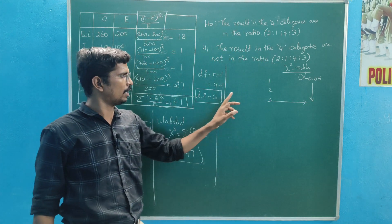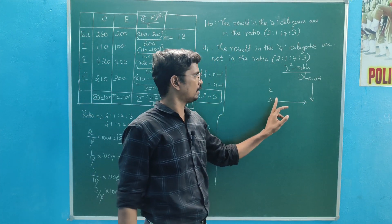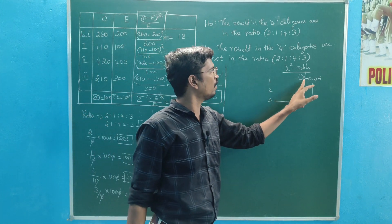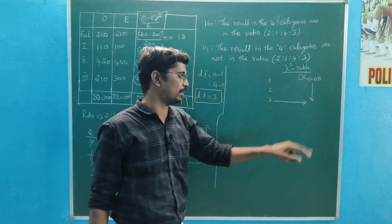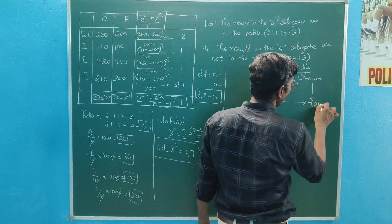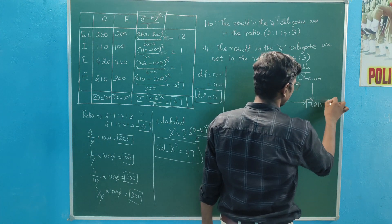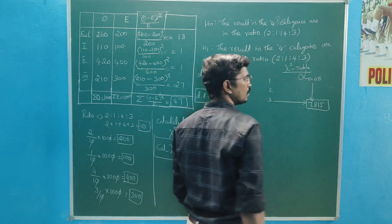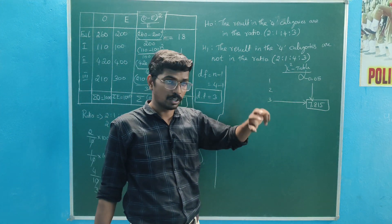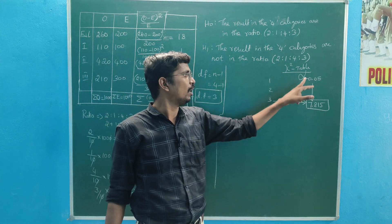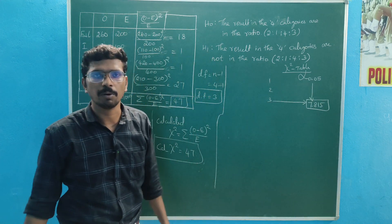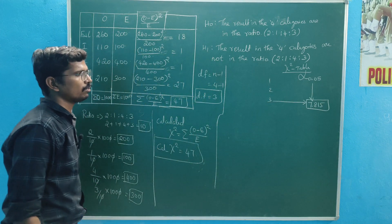Degrees of freedom 3, equal to alpha 0.05, is equal to 7.815. Chi-square table value equal to 7.815.